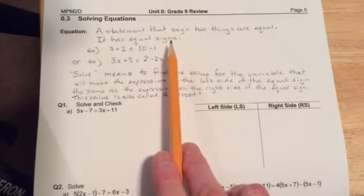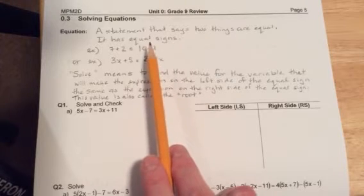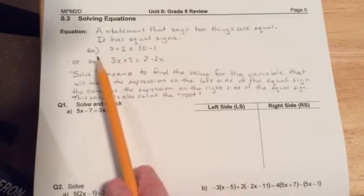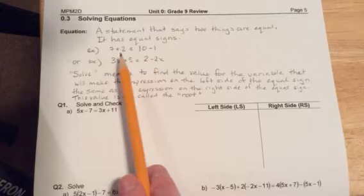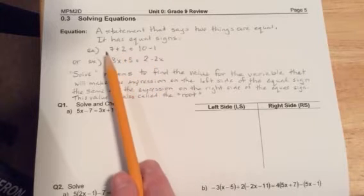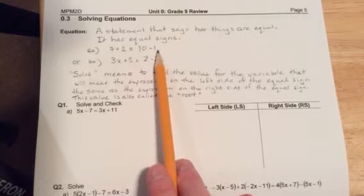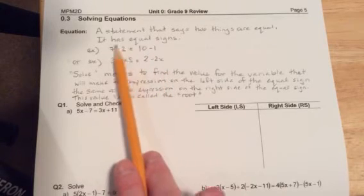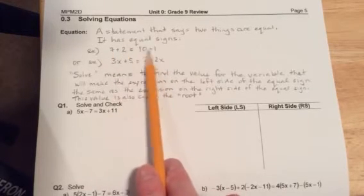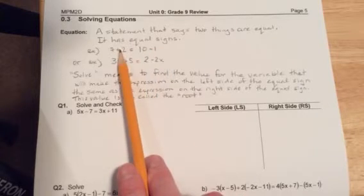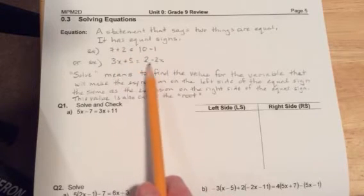Yesterday's examples were just expressions with no equal signs. For example, this could be an equation: 7 + 2 = 10 - 1. They're equal because 7 + 2 is 9 and 10 - 1 is 9. So 9 does equal 9. It's an equation.